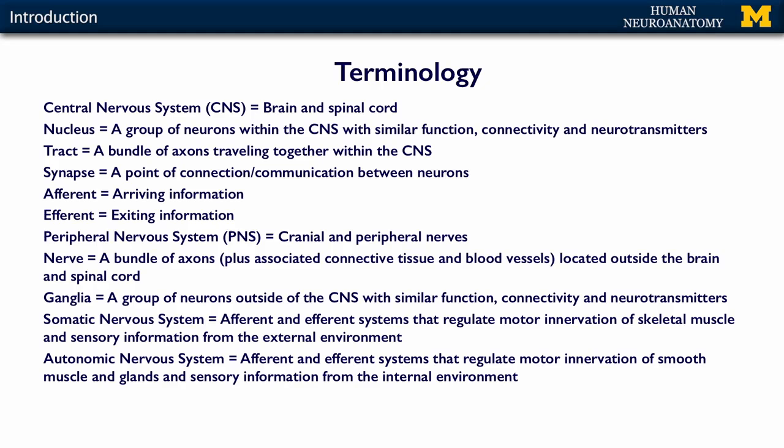Ganglia — that's a group of neurons outside the CNS that has similar function, connectivity, and neurotransmitters. I don't know why we have to have separate words for inside and outside the CNS, but we do. So ganglia are outside; a nucleus is inside.